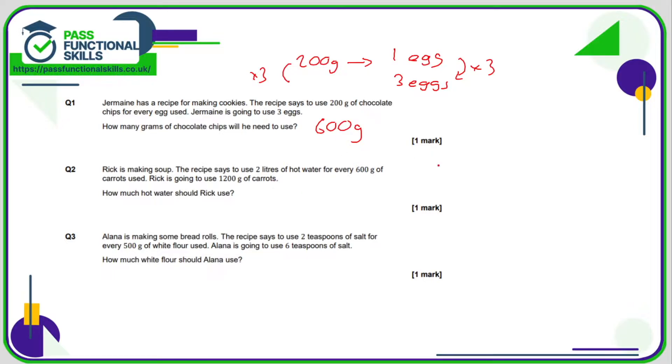In question two, we know that it's two liters of water for 600 grams of carrots. So if he's using 1200 grams of carrots, that is double the amount of carrots, so he's going to need double the amount of water as well, so that is four liters.